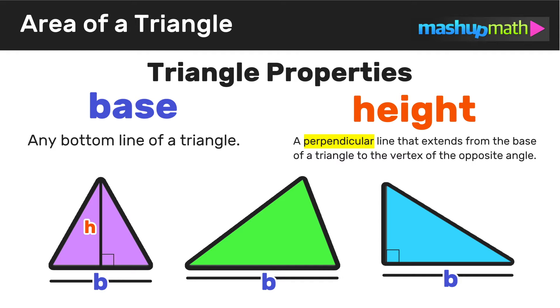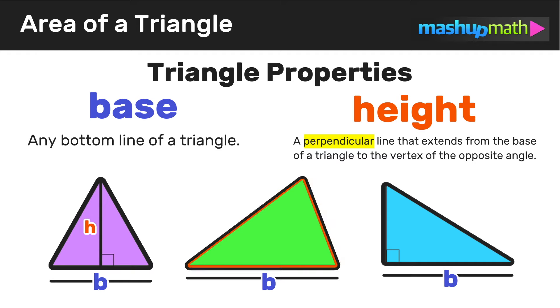We label the height of a triangle with the letter H, and H represents the value of that height — the length of that line.